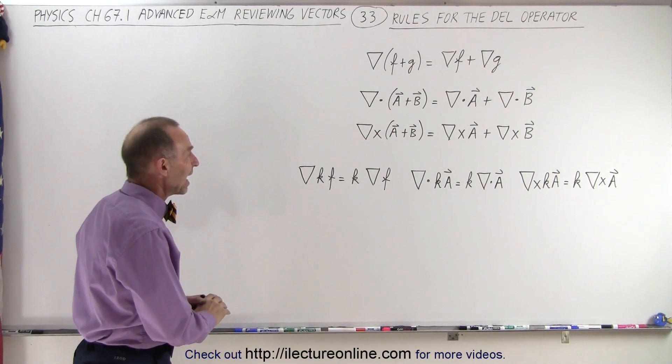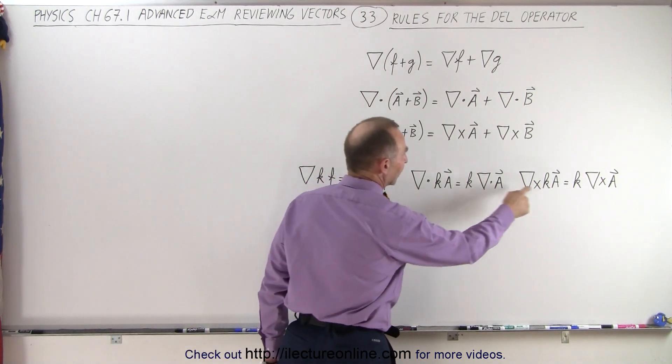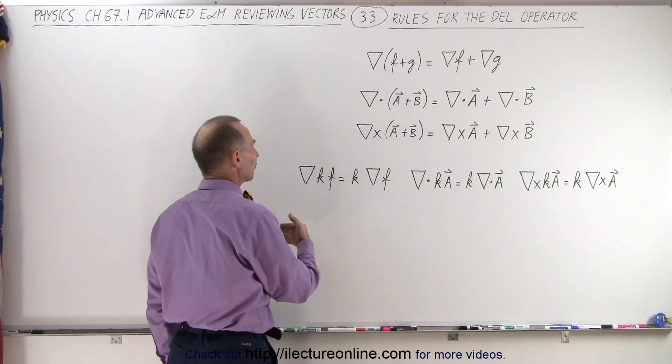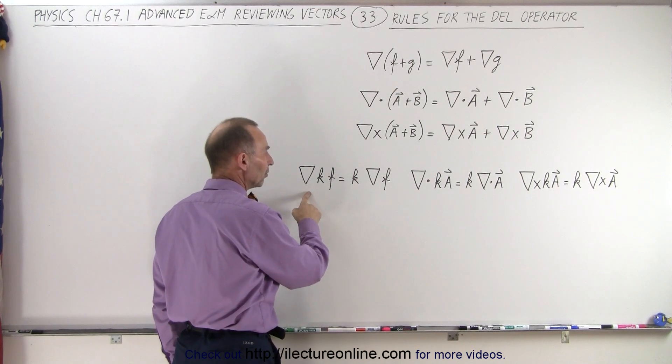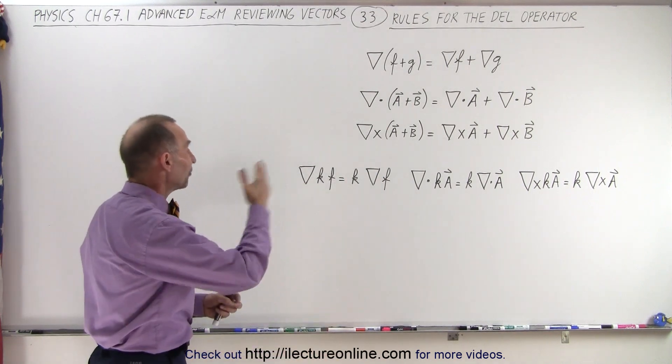Now what if we have a constant multiply times a scalar function or a constant multiply times a vector function, and we either find the gradient, the divergence, or the curl. It doesn't matter.